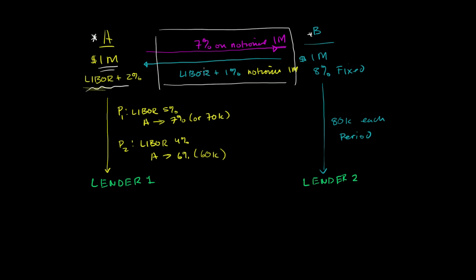They entered into a swap agreement where Company A pays a fixed 7% every period, 7% on a notional $1 million. Notional means the $1 million doesn't exchange hands, only the interest does. A pays 7% on that notional million every period to B. B pays LIBOR plus 1% on that notional million every period to A, so it pays a variable rate on that notional amount.